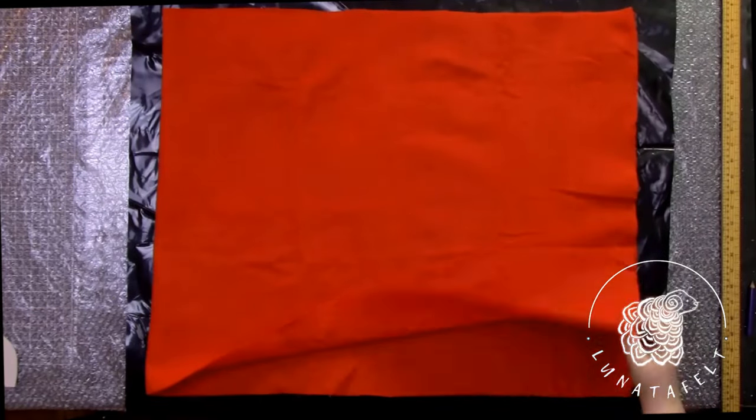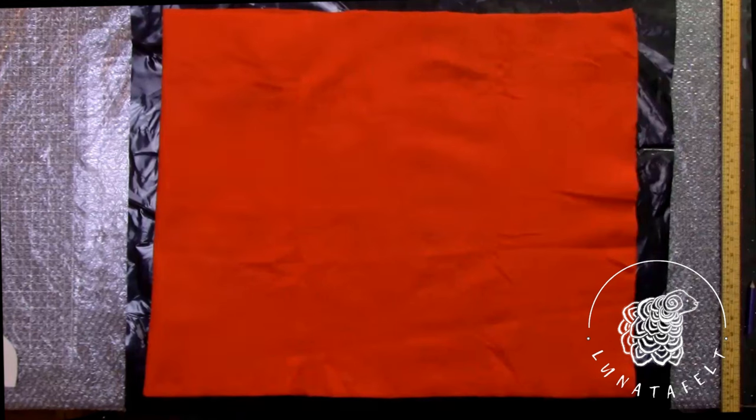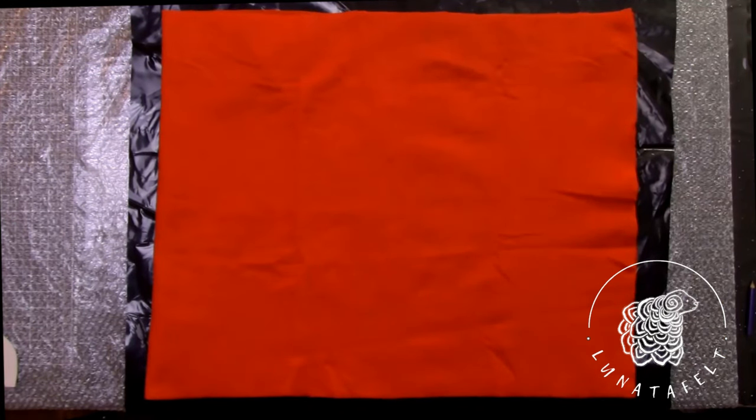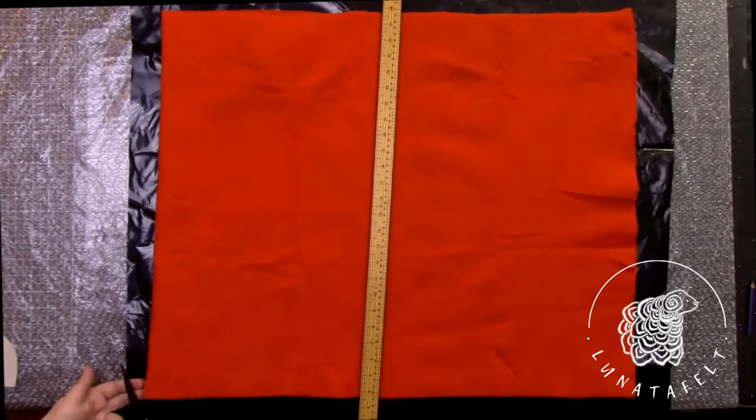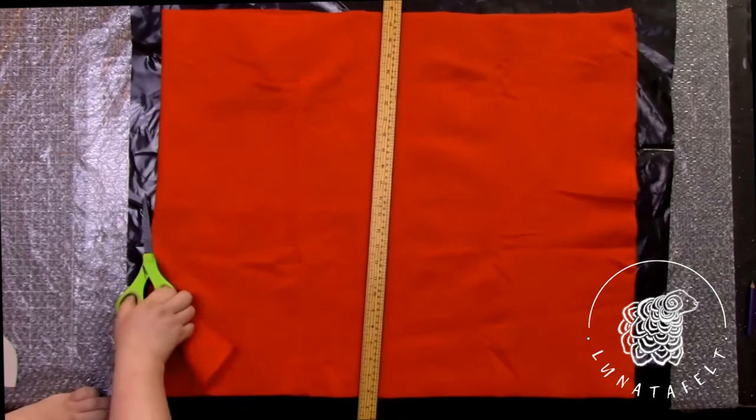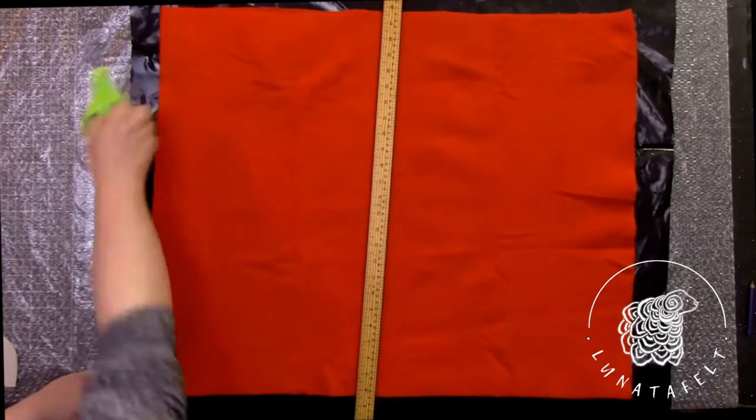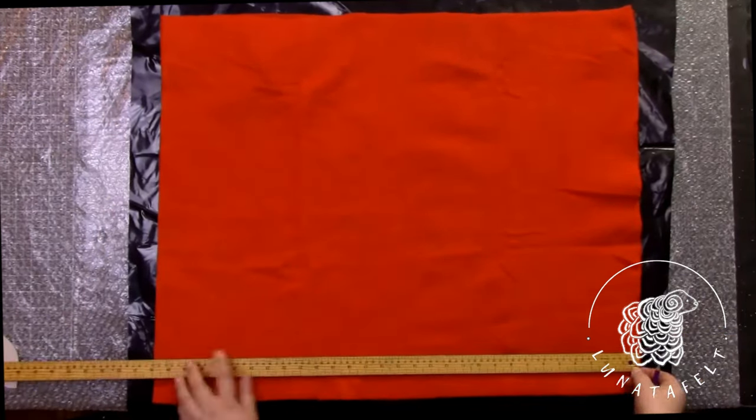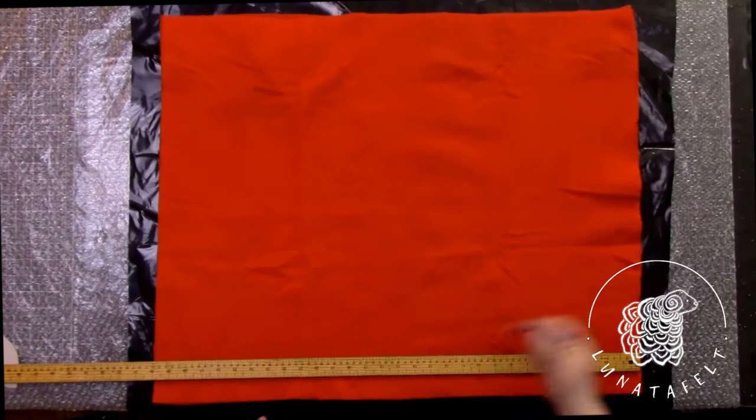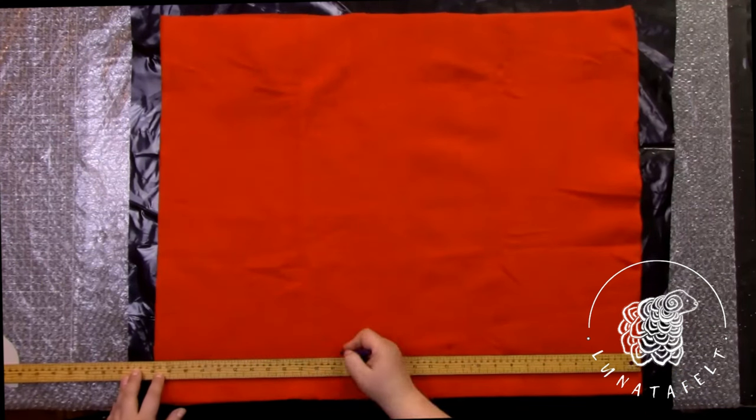The first step will be marking the pre-felt. The pre-felt cloth is folded in half and in front of me is a rectangle 75 by 60 centimeters. First, I cut along the fold line, resulting in two pieces of 75 by 60 centimeters. Then, using the ruler, we mark 15 centimeter strips and cut them. These will be our blanks.